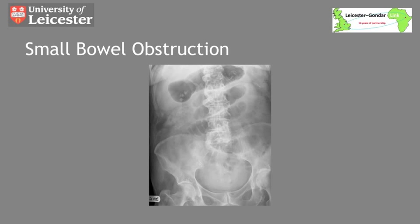Not all obstructions are as dramatic as the last example, but in this example you can see six loops of small bowel. You know this is small bowel as we can see valvulae extending the whole way across the lumen. Again there is no air visible in the large bowel. This lady has had an obstructed femoral hernia which was successfully managed surgically.